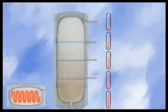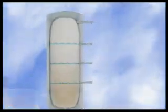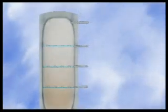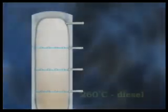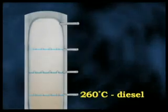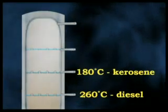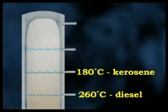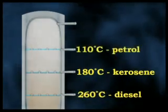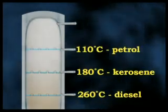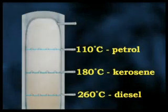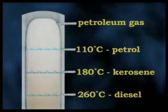The precise details are different at every refinery and depend on the type of crude oil being distilled. But at around 260 degrees, diesel condenses out of the gas. At around 180 degrees, kerosene condenses out. Petrol or gasoline condenses out at around 110 degrees, while petroleum gas is drawn off at the top.